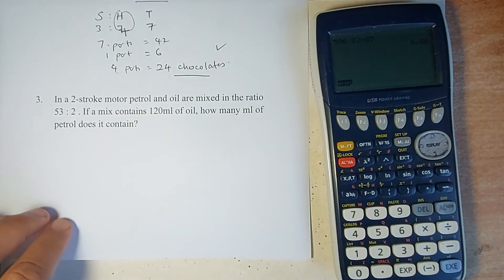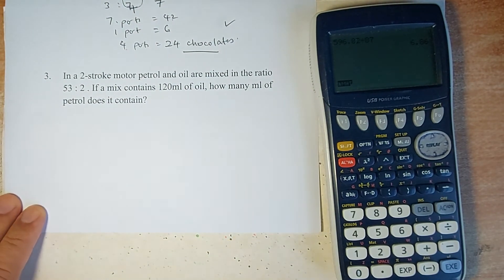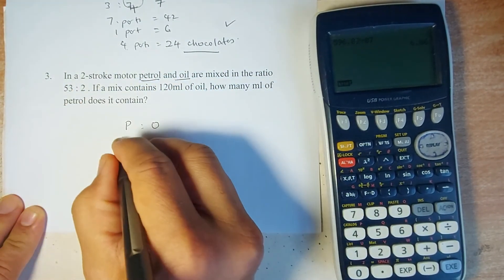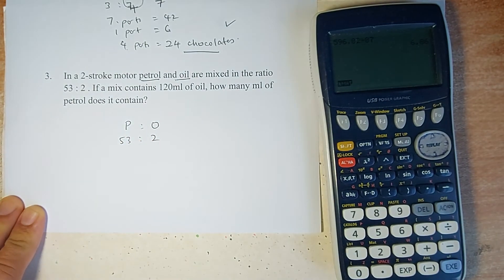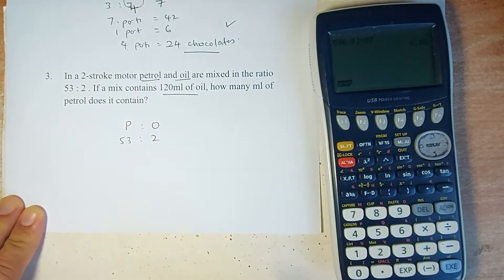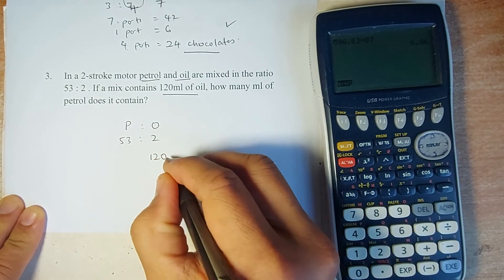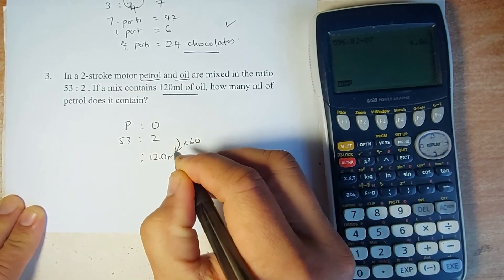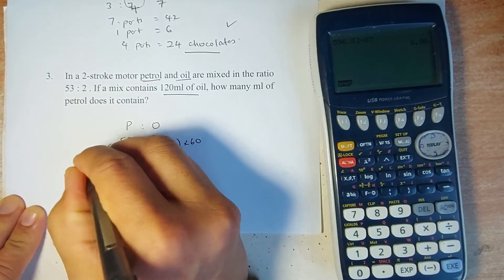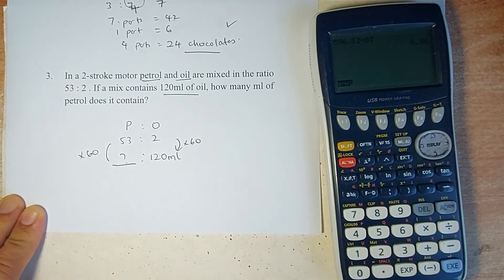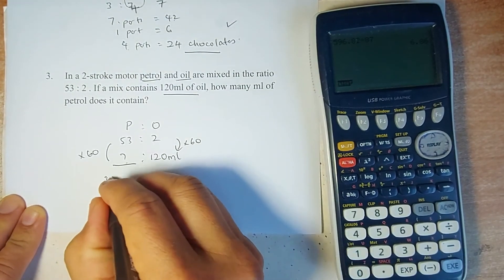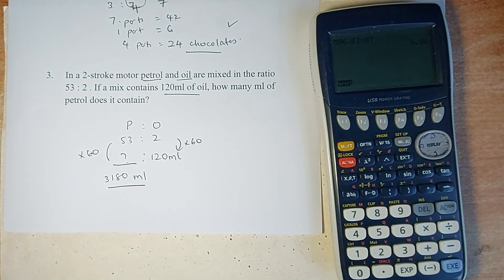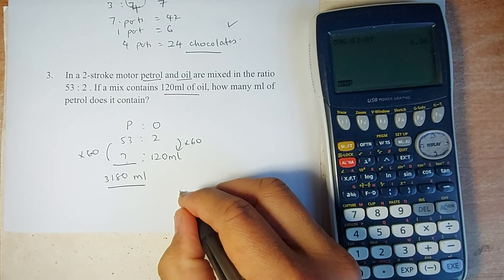The last question is slightly different. The petrol to oil ratio is 53 to 2. If the mixture contains 120 milliliters of oil, so 120 milliliters is the 2 parts. To get from 2 to 120, you multiply by 60. Similarly, to get the answer for petrol, you need to multiply 53 by 60. Put it in your calculator and the answer is 3180. You must put the unit, so there will be 3180 milliliters of petrol. That will give you two marks.